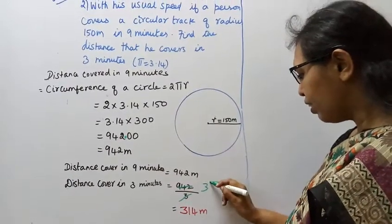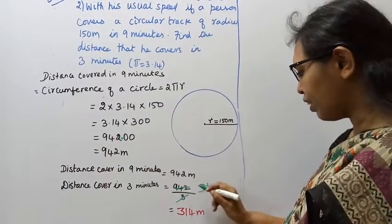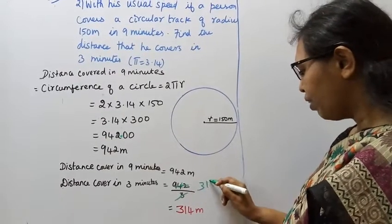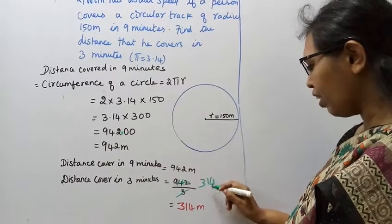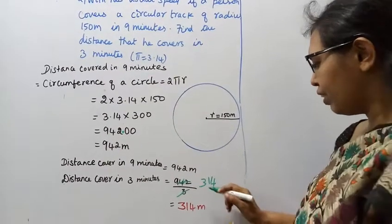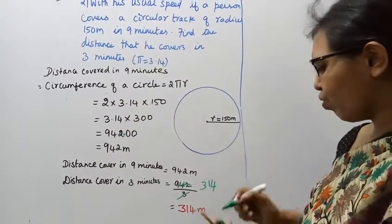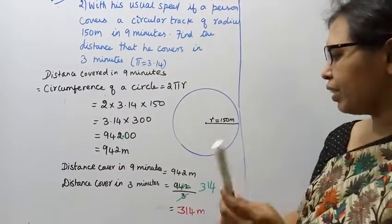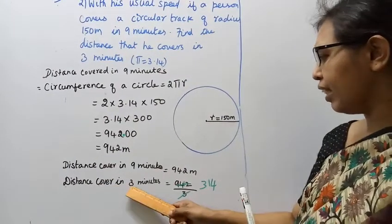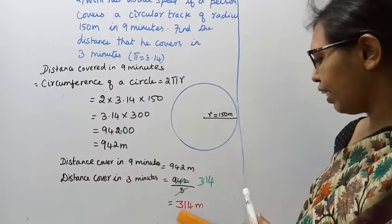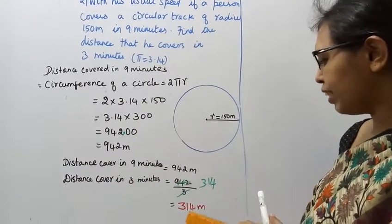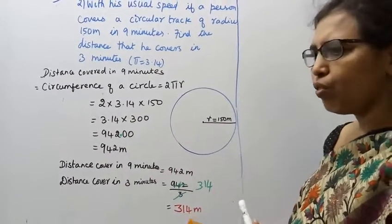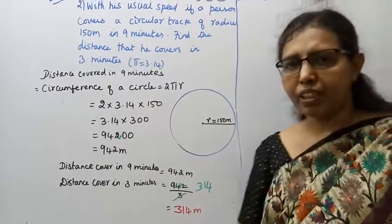3 ones are 3, balance 1; 12 — 3 fours are 12. Distance covered in 3 minutes is 314 meters.